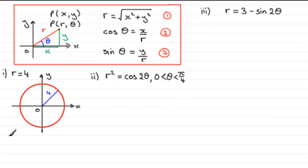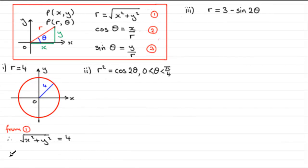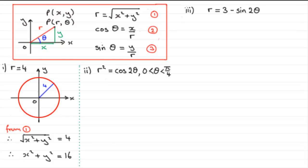To convert to Cartesian form, we know r equals the square root of x squared plus y squared, so from equation one we get: root of x squared plus y squared equals four. Squaring both sides gives x squared plus y squared equals sixteen — the Cartesian equation of a circle, centre the origin, radius equal to the square root of sixteen, which is four.